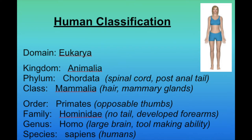Our order is Primates, which means we have opposable thumbs. Our family is Hominidae, which means we don't have a visible tail and we have developed forms. Our genus is Homo, which means we have a large brain and show the ability to make and use tools. Our species, or specific epithet, is sapiens — that's just the assignment we've given ourselves. Each one of these levels tells you something important about the species.